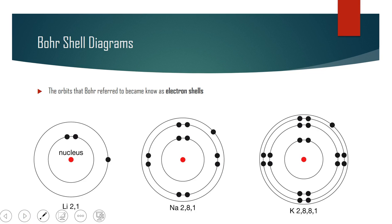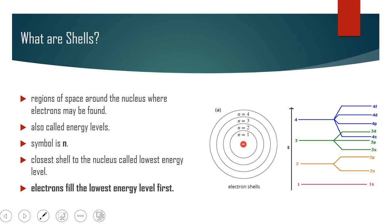When we look at the Bohr models, he referred to these as electron shells. Lithium has two shells, shell 1 and shell 2. Sodium has three, and potassium has four shells. Shells are physical regions in space around the nucleus where we can find electrons, and they correspond to an actual distance away from the nucleus.